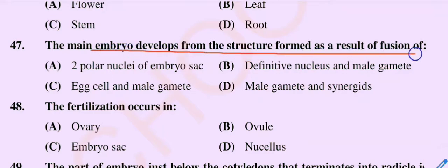Question number 47: The main embryo develops from the structure formed as a result of fusion of — option A two polar nuclei of embryo sac, option B definite nucleus and male gametes, option C egg cell and male gametes, option D male gametes and synergids. The correct option is option C, egg cell and male gametes.